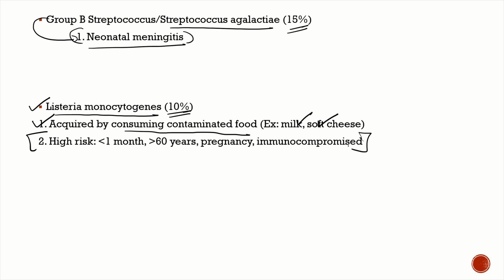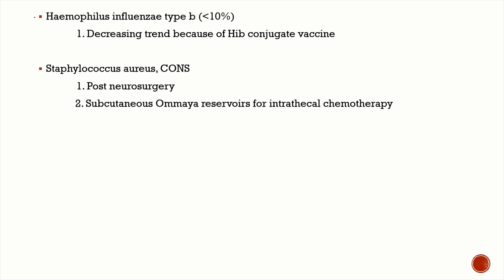High-risk factors for Listeria meningitis are: young infants less than one month of age, patients over 60 years of age, pregnant patients, and immunocompromised patients. Whenever starting empirical antibiotic therapy, if the patient fits any of these risk factors, it is very important to add ampicillin to cover Listeria.